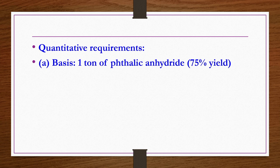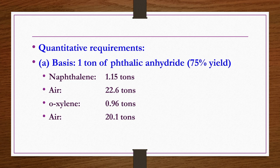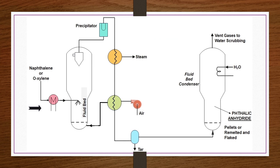Quantitative requirements: to produce 1 ton of phthalic anhydride at 75% yield — using naphthalene: 1.15 tons of naphthalene and 22.6 tons of air required; using ortho-xylene: 0.96 tons of xylene and 20.1 tons of air required. Raw material requirement is slightly less with xylene. Plant capacity is 15–150 tons per day. In the flowchart, whether naphthalene, ortho-xylene, or a mixture is used, the feed is preheated and melted, then fed to a reactor, which can be either a fluid bed or packed bed.